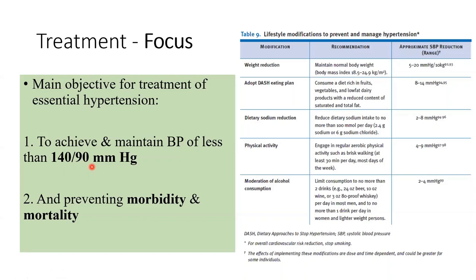The second most important part of treatment is to prevent morbidity and mortality. Morbidity is disease causation and suffering, while mortality is death. One of the mainstays is to decrease both morbidity and mortality.